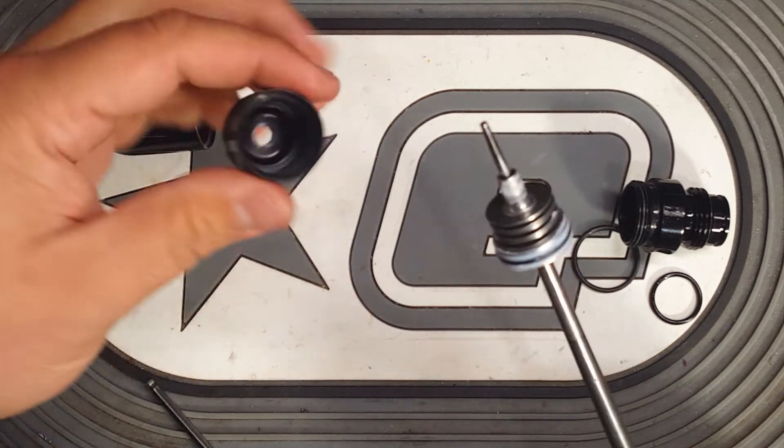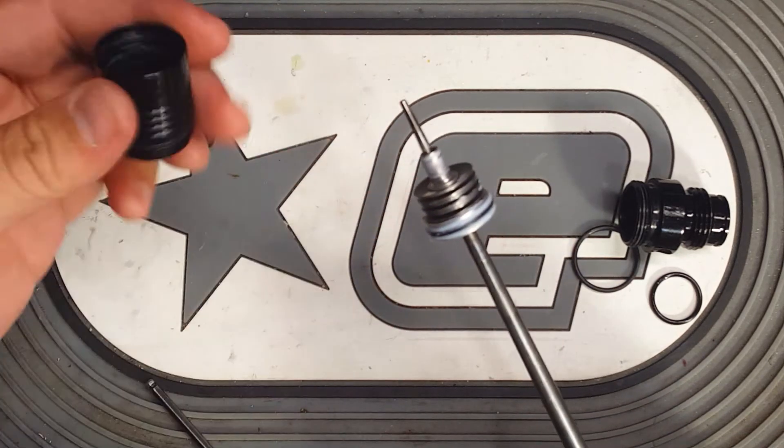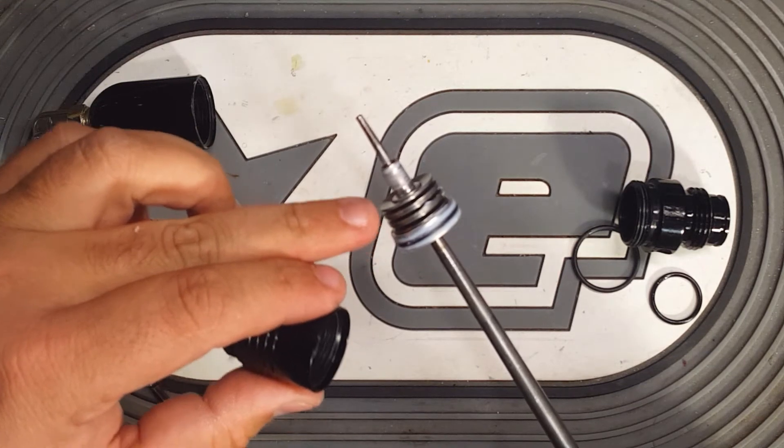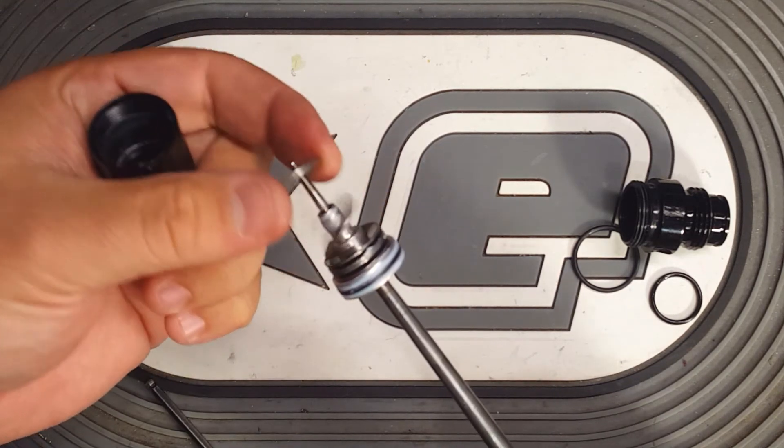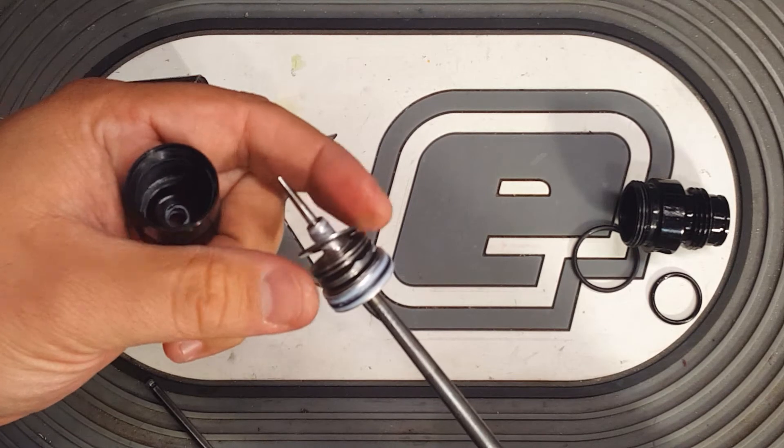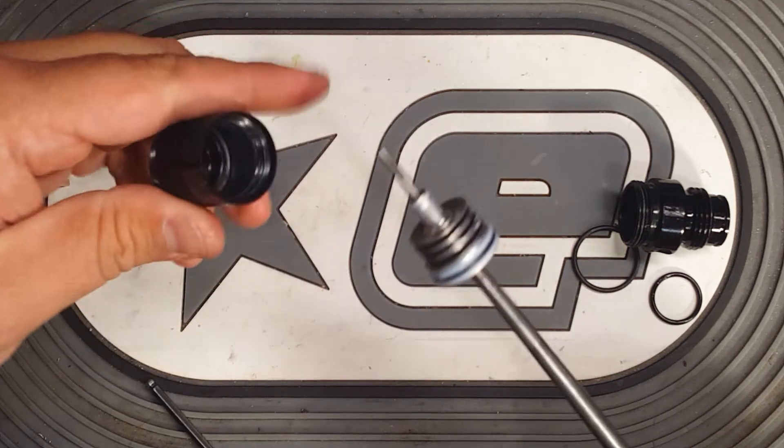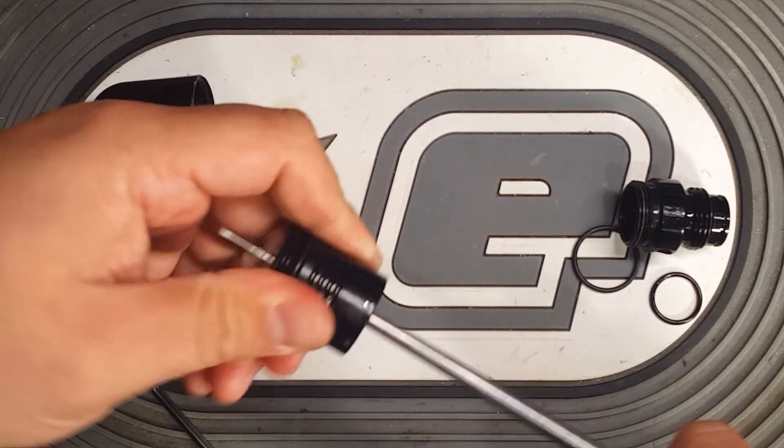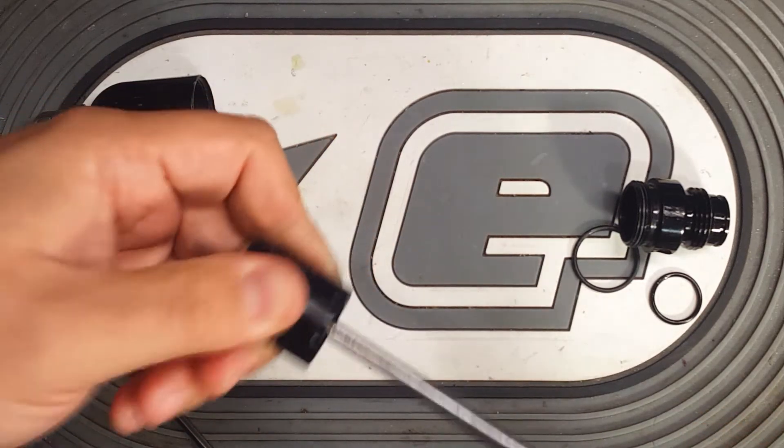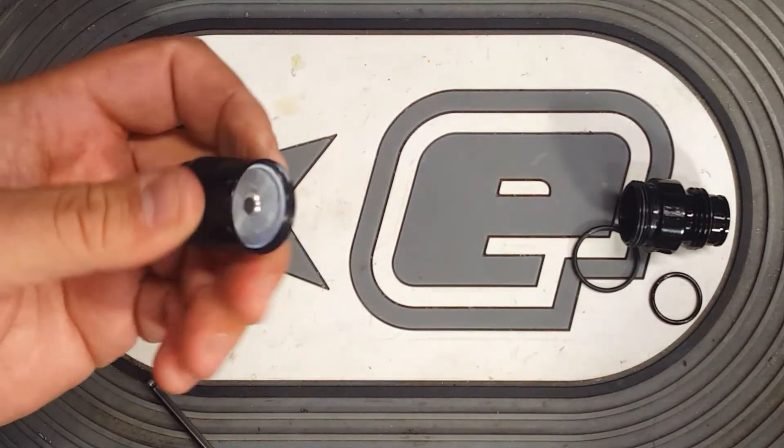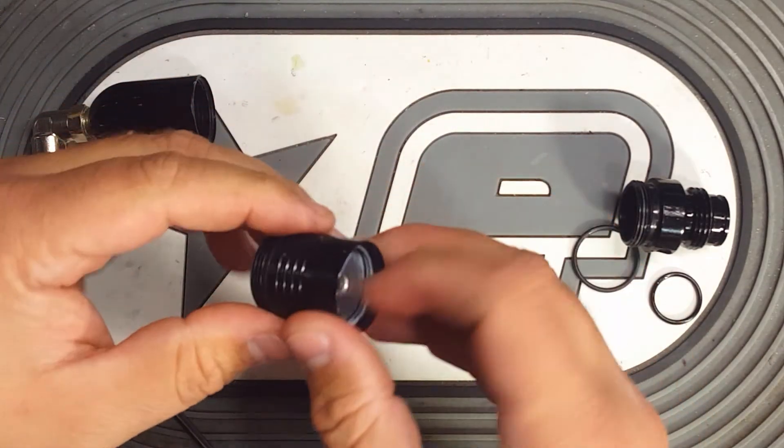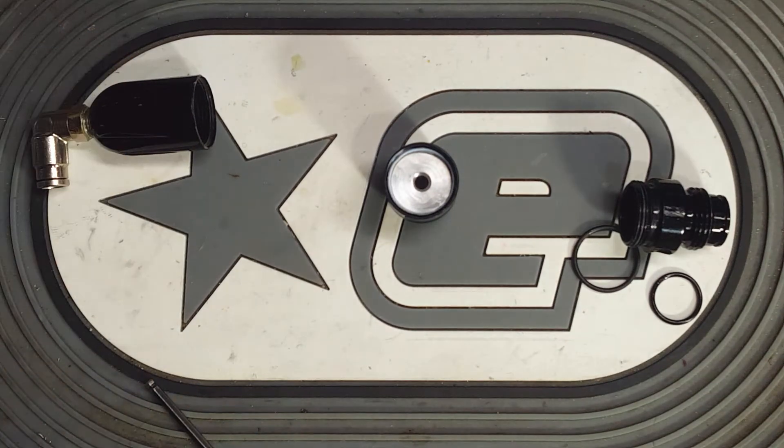So I'm going to put the piston with the Belleville stack back into the middle section here. There should be six Belleville washers, all facing opposite each other when they're on the piston. So just push that back down in the housing. Get your punch back out. It doesn't matter if it doesn't go all the way through. I'll show you how to get that back in here in a second.